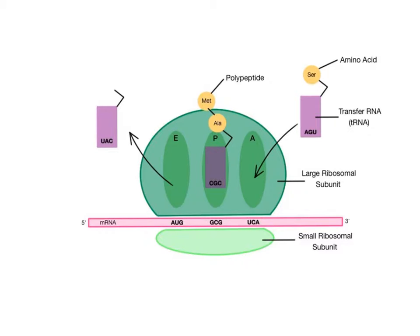The large subunit has three regions designated the A, P, and E sites. These are three pockets that accept the transfer RNA molecules. Think of the A site as the arrival site. As the transfer RNA molecule carrying an amino acid arrives at the ribosome, it will dock into the A site.